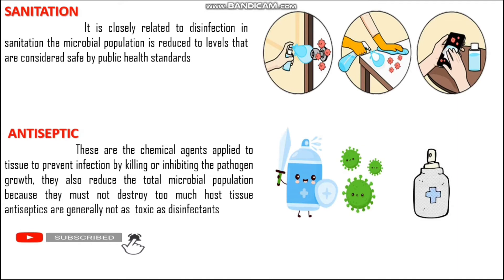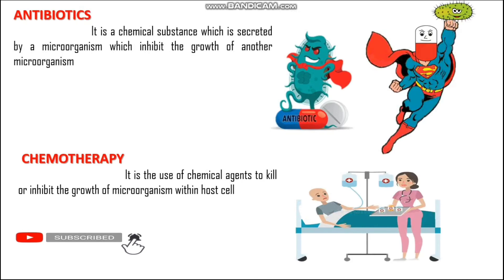The best example for living organisms is antiseptic. Antiseptics are chemical agents applied to tissue to prevent infection by killing or inhibiting pathogen growth. They also reduce the total microbial population. Because antiseptics must not destroy too much host tissue, they are generally less toxic compared to disinfectants. Antiseptics are applied over living tissues to control or reduce the microbial population. Examples of antiseptics include Dettol, etc.